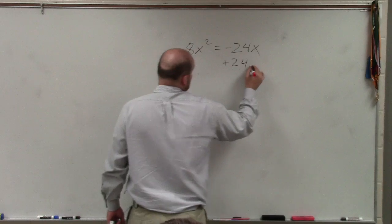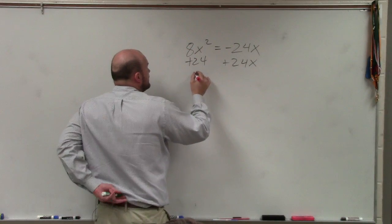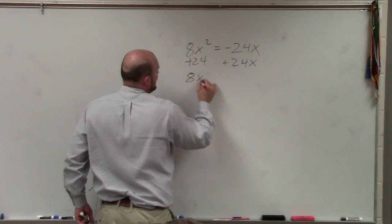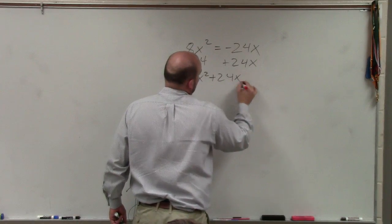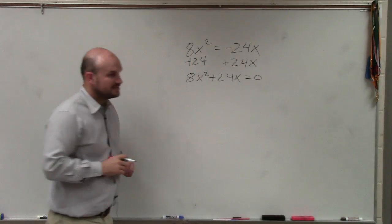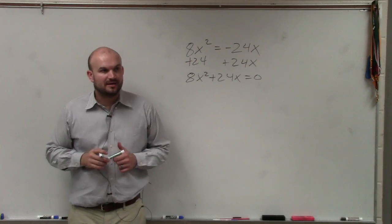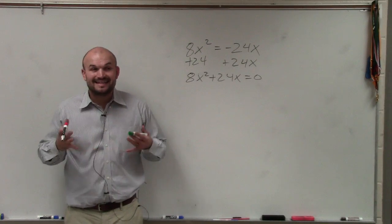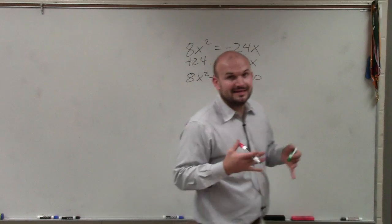So what I'm going to do is I'm going to add a 24x to both sides. When I do that, I obtain 8x squared plus 24x equals 0. Everybody follow me from there. Now we have our equation set equal to 0.